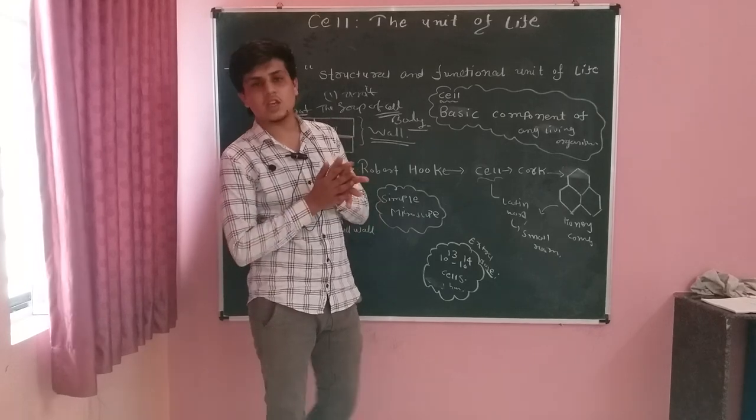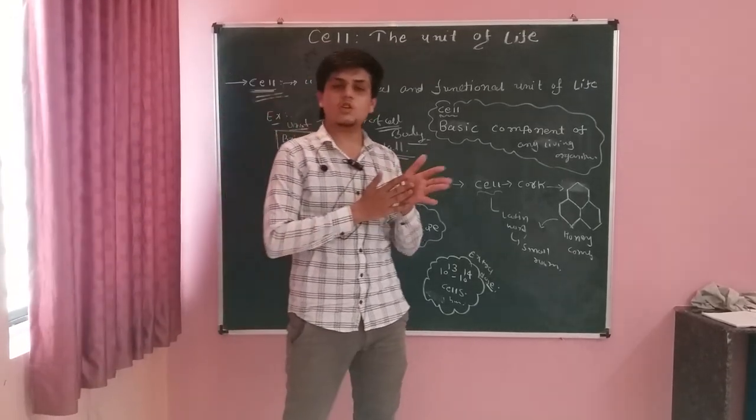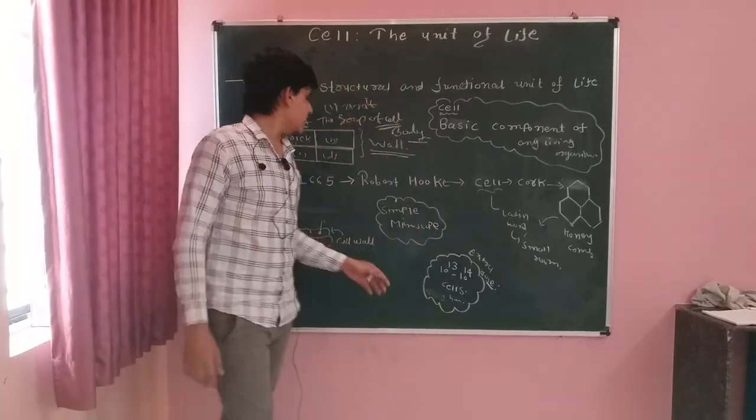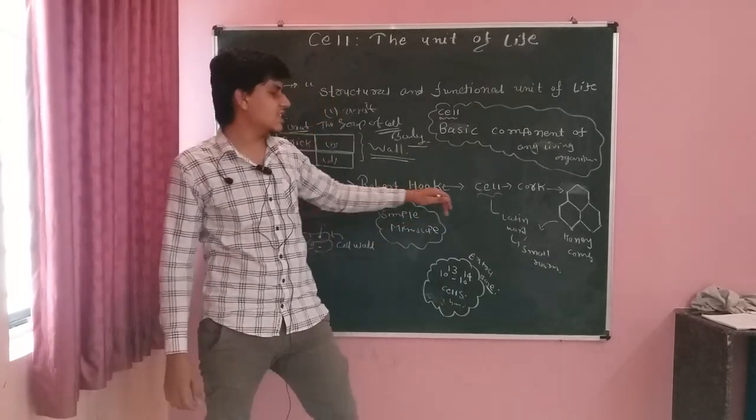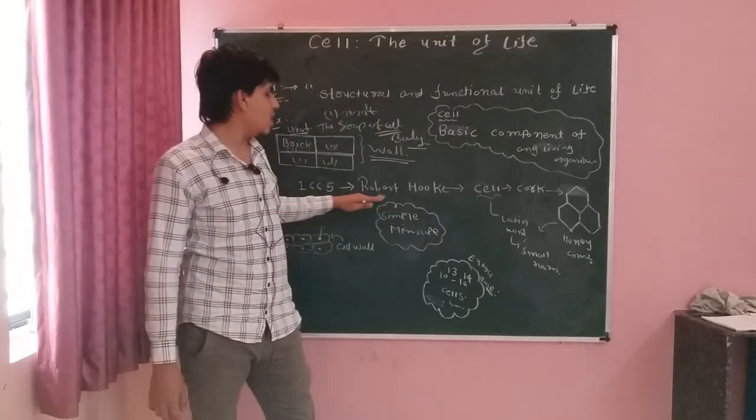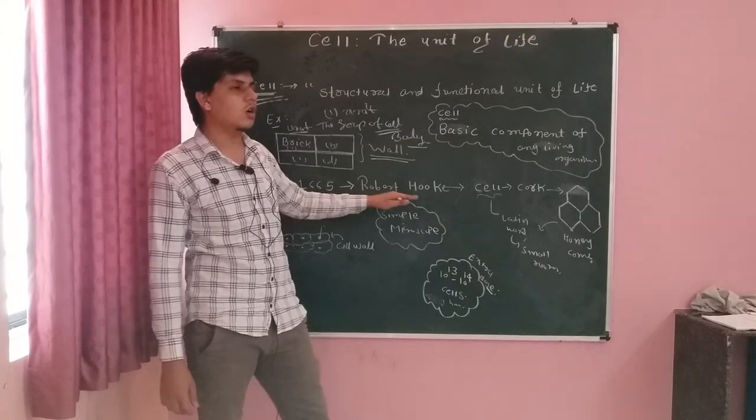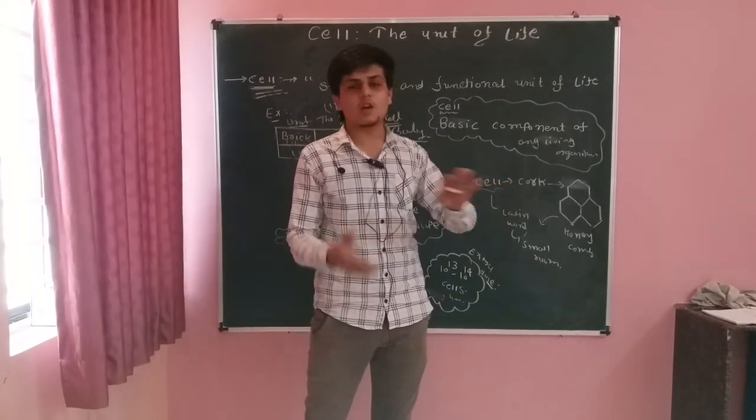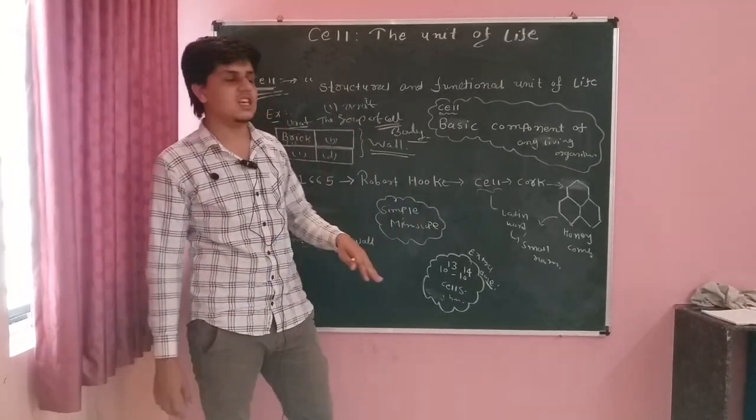Ab aapne jaanne ki ichha hoga ki abhi cell aaya to aaya kahan se, or discover kiya to kiya kisne. Now let's start, who discovered cell? In 1665, the scientist named Robert Hooke discovered cell. The scientist's name was Robert Hooke who discovered cell from the cork. Usne cork ke andar se cell discover kiya. Kab kiya? In 1665.